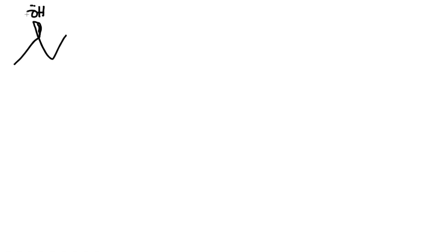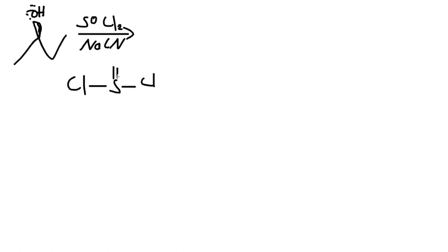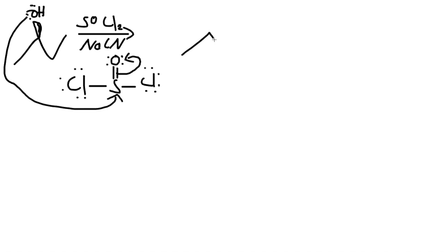For our first problem, let's take an OH on a wedge and react it with SOCl2 followed by NaCN. First, we make the OH a better leaving group using the thionyl chloride. The oxygen has two lone pairs and the chlorines have three lone pairs. The OH oxygen attacks the sulfur of SOCl2. While it does this, the electron pair between sulfur and oxygen goes to oxygen, giving us an intermediate.